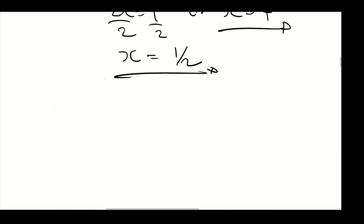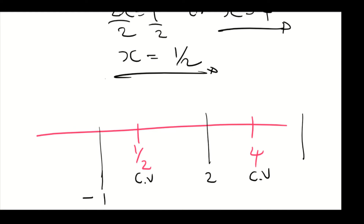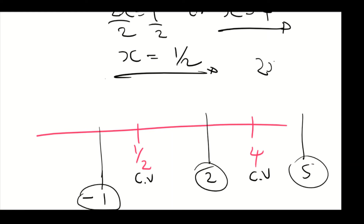We're going to represent them on a number line. We have one half and 4 as our critical values. Then we're going to test values before, between, and after the critical values — so we'll use minus 1 (before), 2 (between), and 5 (after). We substitute these values into the standard form of the equation 2x squared minus 9x plus 4.